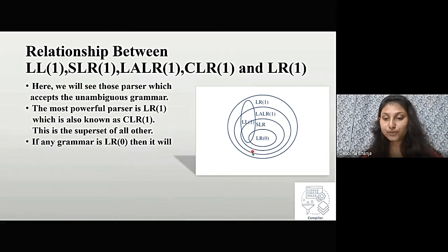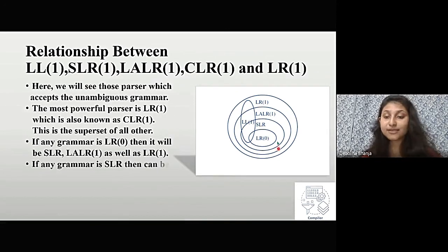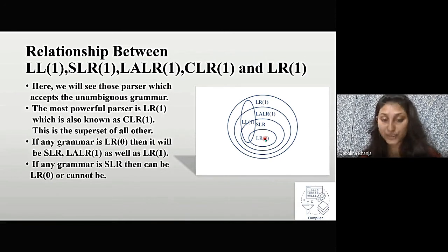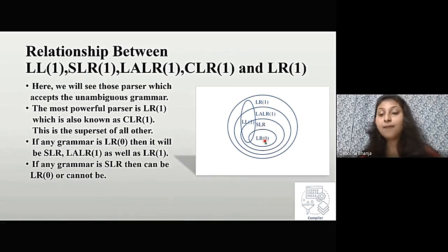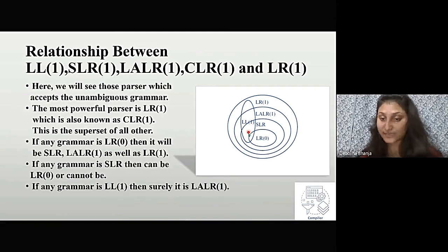If any grammar is LR0, then it is also SLR, LALR1, and LR1. If any grammar is SLR, we cannot be sure whether it is LR0 or not. But if any grammar is LR0, we have surety that it will be SLR, LALR, and LR. Also, remember this property: SLR ≤ LALR ≤ CLR. If any grammar is LL1, then it will surely be LALR1.